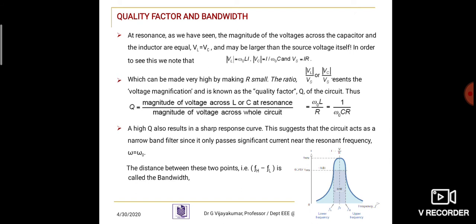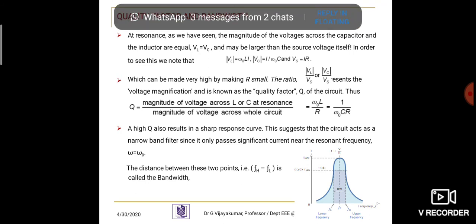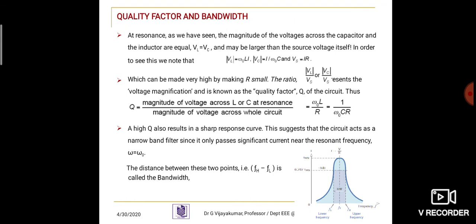A high Q results in a sharp response curve. This means the circuit acts as a narrow band filter since it only passes significant current near the resonant frequency omega-naught. From the figure, FL is the lower frequency and FH is the higher frequency. Bandwidth means the difference between the lower frequency and the higher frequency — the signal is allowed to pass only in that range. So FH minus FL is called the bandwidth frequency.